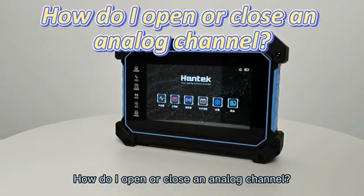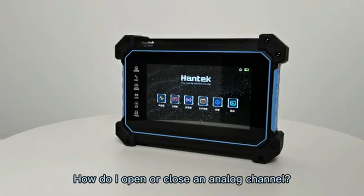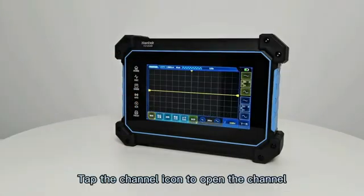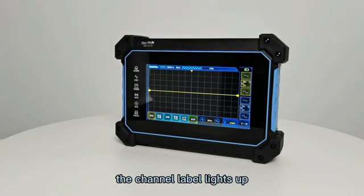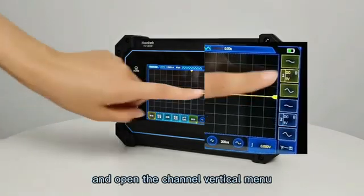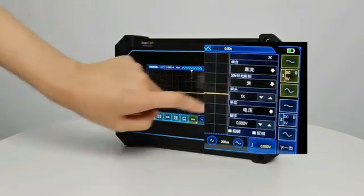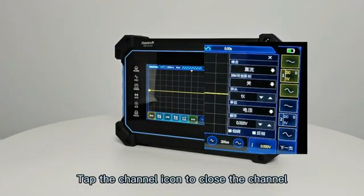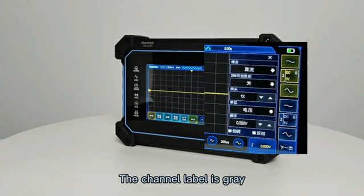How do I open or close an analog channel? Tap the channel icon to open the channel. The channel label lights up and opens the channel vertical menu. Tap the channel icon to close the channel, and the channel label becomes gray.